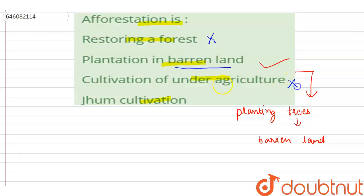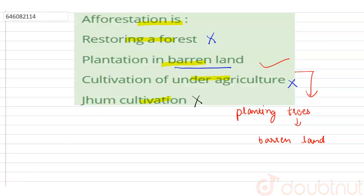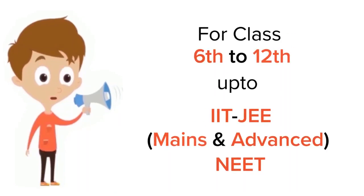It is not the cultivation of under agriculture. Jhum cultivation is the other name for slash and burn agriculture, which is a type of cultivation. So the correct option is plantation in barren land.